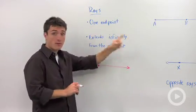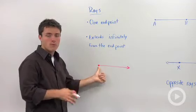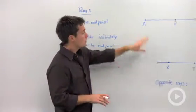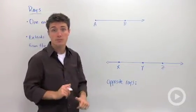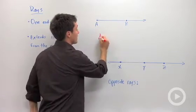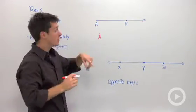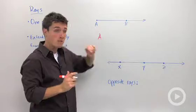and it extends infinitely from that endpoint, but how do you label a ray? Well, you start off by saying, what is your endpoint? My endpoint of this ray is A because that's where it starts, and it extends through point B.